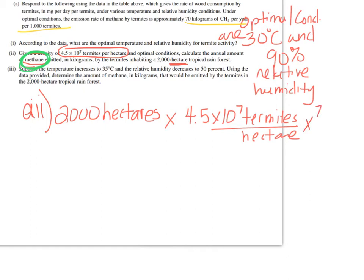So I also need to multiply by this next given. And it tells us, at the top, that 70 kilograms of methane, which is CH4, per year, per 1,000 termites. So let's go through and cancel some things. So hectares cancel, termites cancel, and what am I left with? I'm left with methane per year, which is what I want. So I know I've set this up correctly.